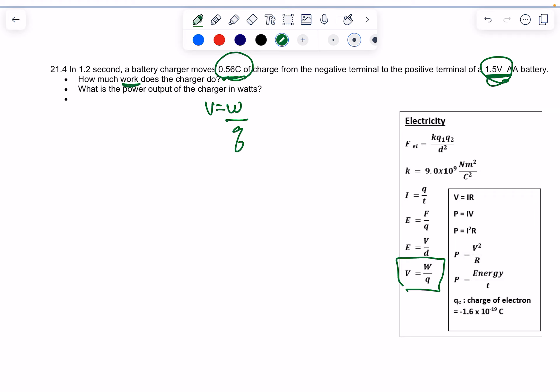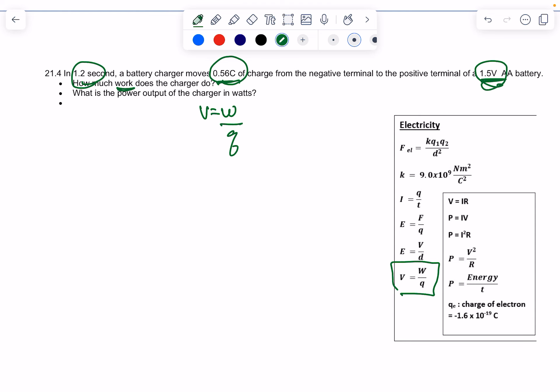Power output, what is power output? You've got a time right here. So power is work divided by time. It may not be on here.